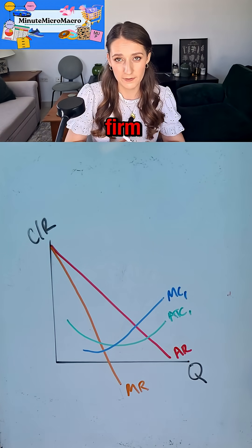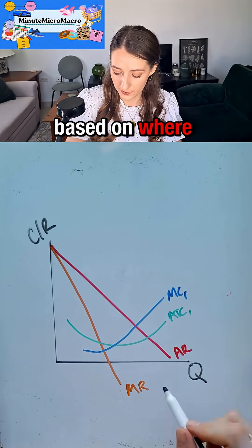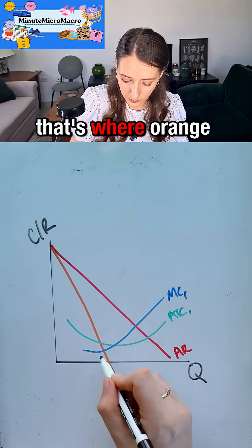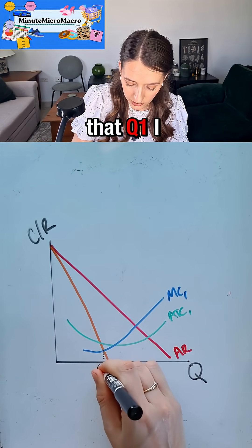We know that a profit maximizing firm sets its output based on where MC equals MR. That's where orange and blue intersect. I'm going to call that Q1.